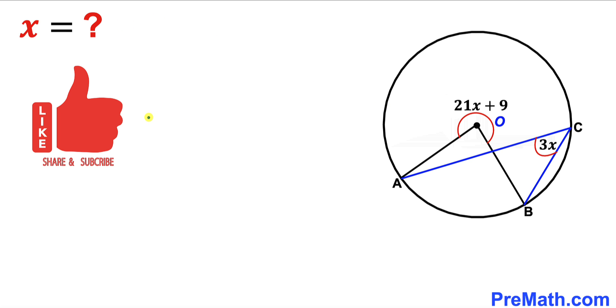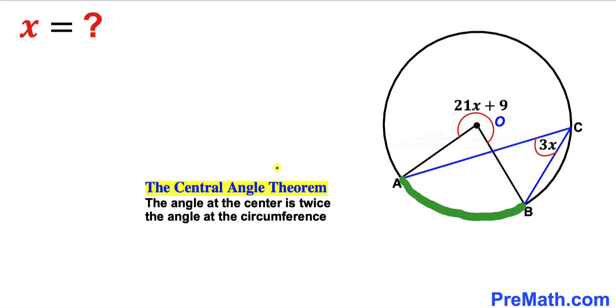Please don't forget to give a thumbs up and subscribe. Let's go ahead and get started with the solution. Let's focus on this arc AB. This subtends two angles. One angle is at the center and this angle is at the circumference.